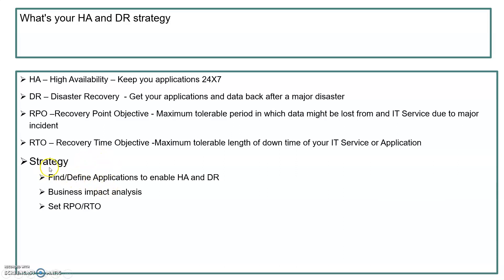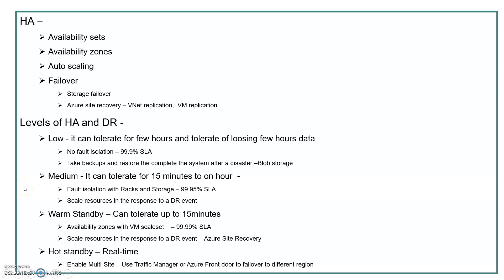When defining your strategy, identify the applications where you need to enable HA and DR, assess the business impact, perform a business impact analysis, and set RPOs and RTOs for those applications. For high availability, Azure provides many features: availability sets on VMs, availability zones on VMs, auto scaling, failover, storage failover, and Azure Site Recovery. With Azure Site Recovery you can configure VNet replication and VM replication.